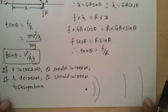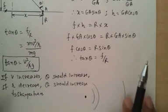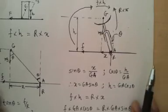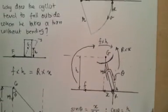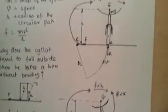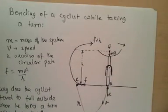I hope this has given you some idea about why a cyclist bends while taking a turn, and it has also given you some idea about the physics and the forces involved in this. Thank you.